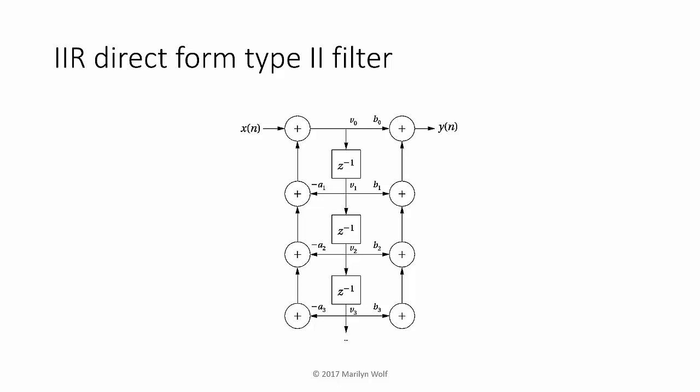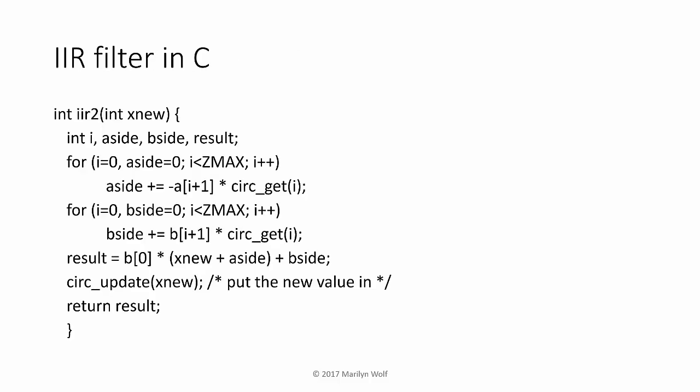An IIR filter or infinite impulse response filter is another form of digital signal processing filter, more complicated structure, but once again it uses the z-1 stored values along with the current value, multiplies by coefficients, and adds partial products. Here's code for the IIR filter in C. It also uses the circular get function and circular update.